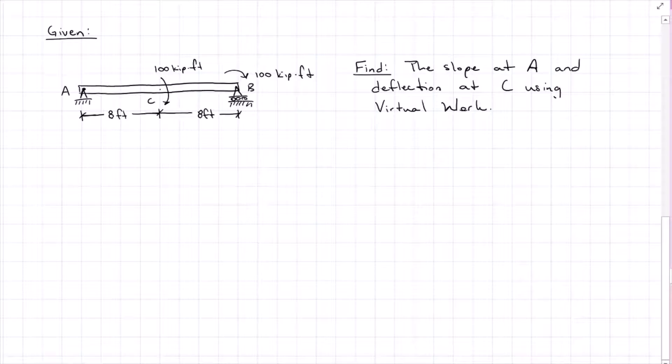We've seen this beam before because I've used it for moment area method and conjugate beam. But I want to show you that there's consistency in all the answers. So we've got this simply supported beam with two moment loads. And I want to find the slope at A and the deflection at C, this time using virtual work. From previous methods, we find that AY is 12 and a half kips down. AX is equal to zero, and BY is 12 and a half kips up.